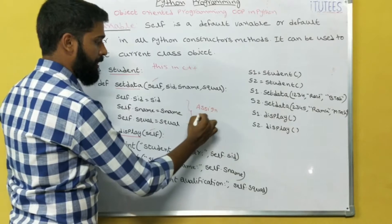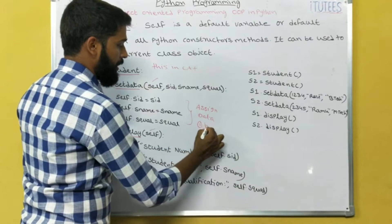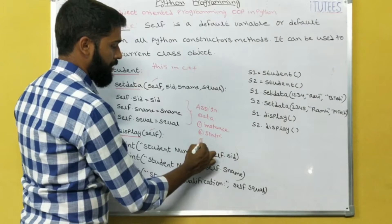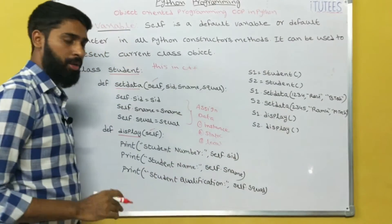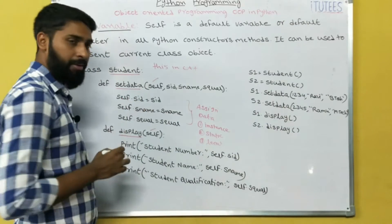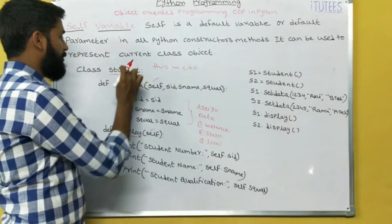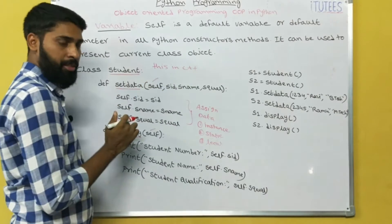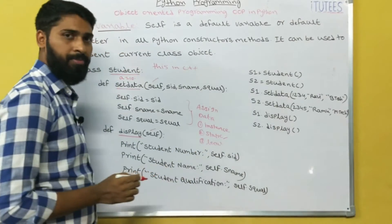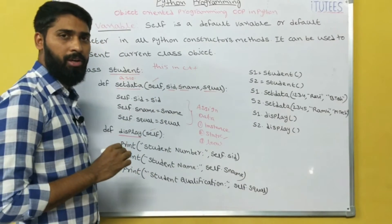We assign data to variables. There are three types of variables in Python. One is instance variable. Second one is static variable. Third one is local variable. Instance variables are those you declare with the help of self. If you define a variable inside the class but outside the method — for example, a = 10 — those are called static variables. Variables you define inside a function are called local variables.